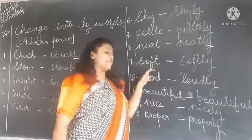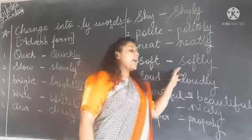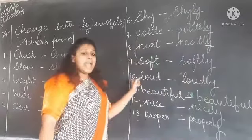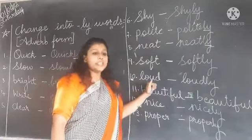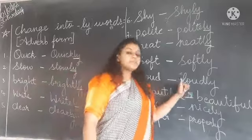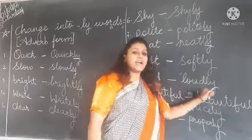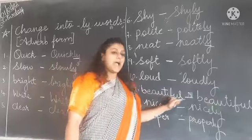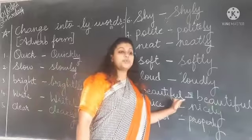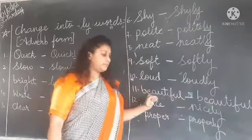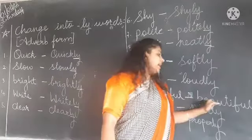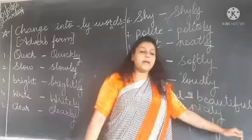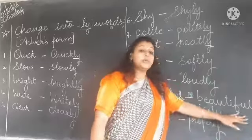Next: Soft — S-O-F-T. The adverb form is Softly — S-O-F-T-L-Y. Then Loud — L-O-U-D. The adverb form is Loudly — L-O-U-D-L-Y. Then Beautiful — B-E-A-U-T-I-F-U-L. The adverb form is Beautifully — B-E-A-U-T-I-F-U-L-L-Y.